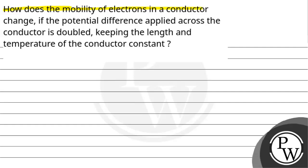How does the mobility of electrons in a conductor change if the potential difference applied across the conductor is doubled, keeping the length and temperature of the conductor constant?